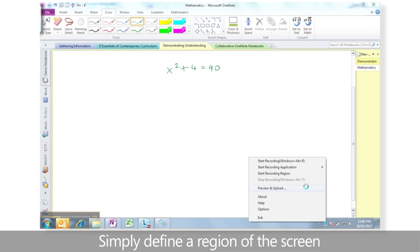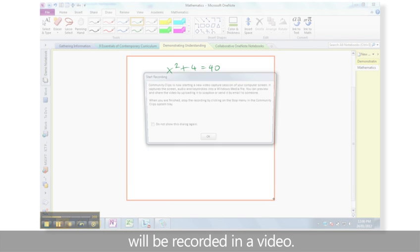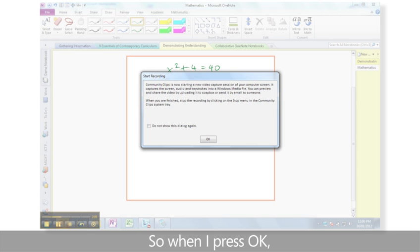Simply define a region of the screen and anything within that region will be recorded in a video. So when I press OK, it will start recording and I'm going to pretend I'm a student.